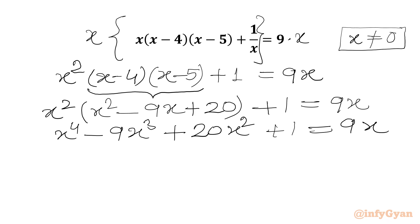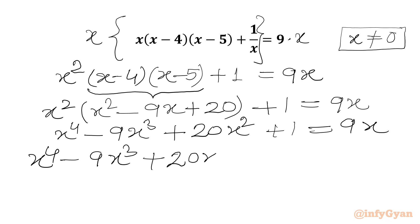Let us write all the terms on the LHS. We get x to the power 4 minus 9x cubed plus 20x squared minus 9x plus 1 equal to 0.